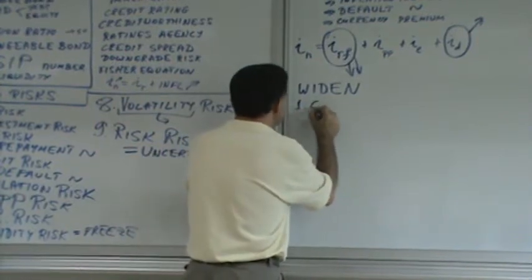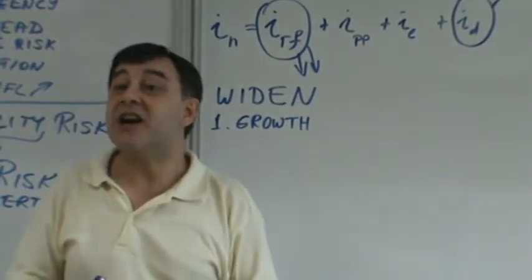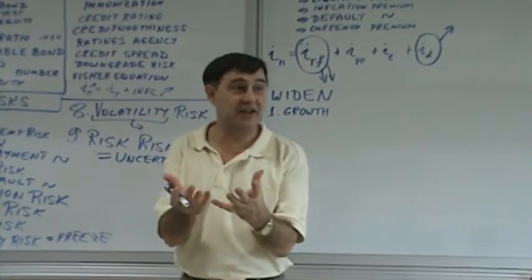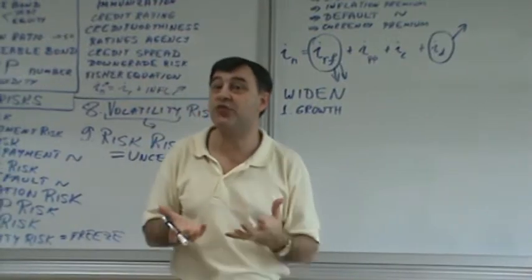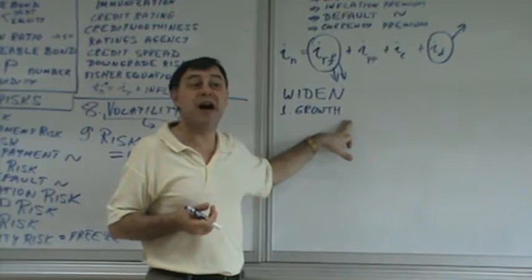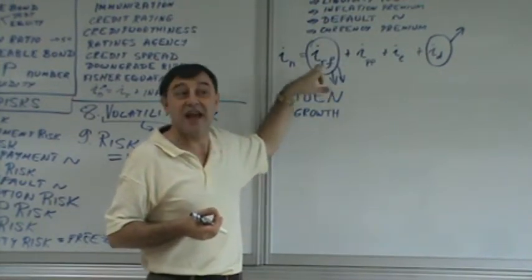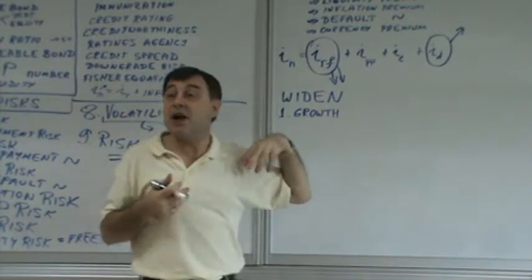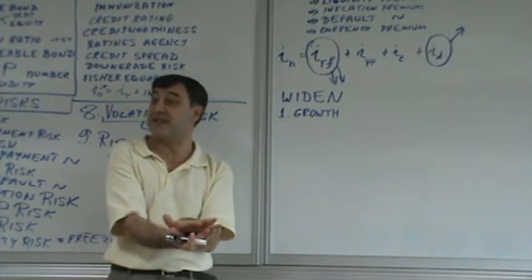The first factor is growth, as in economic growth. If the economy is expected to grow well, and for growth to accelerate, demand for credit is going to go up, and therefore demand for credit will push up the prices. So, strong economy implies strong risk-free interest rates, and weak economy implies falling. As the economy slips into a recession, suddenly risk-free rates will fall significantly.